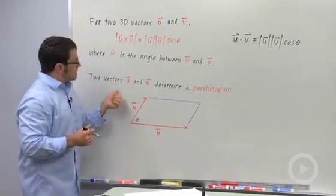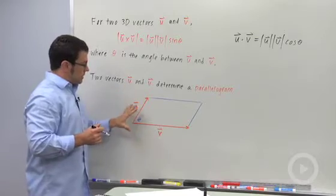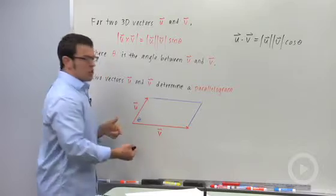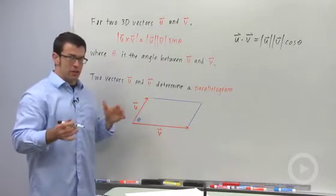All right. Now let's imagine a situation. We have two vectors. If we put the two vectors end to end, they will always determine a parallelogram in space or in a plane.